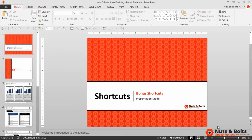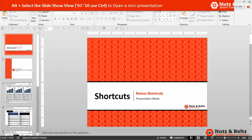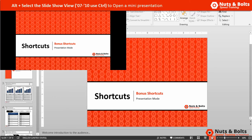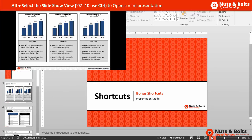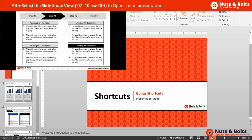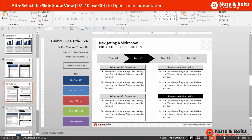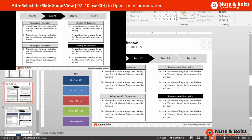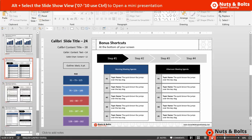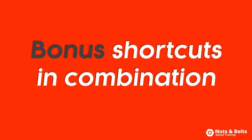One other interesting shortcut: in PowerPoint 2013, hold the Alt key — or in PowerPoint 2007 and 2010, hold the Ctrl key — and select the Slideshow view. This runs a mini presentation in the upper left-hand corner of your screen. When you hit Escape, you'll move to that slide. It's a quick way to preview your slideshow without going full screen.